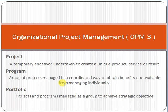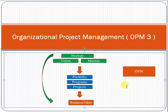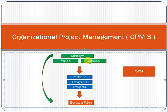Before going deeper, I just described the definitions of project, program, and portfolio. Now coming to the definition of OPM — every organization has some strategy. Strategy means the organization has a vision, which is where the company wants to go, and a mission, which is how the company will achieve that vision. So strategy has two parts: vision and mission.